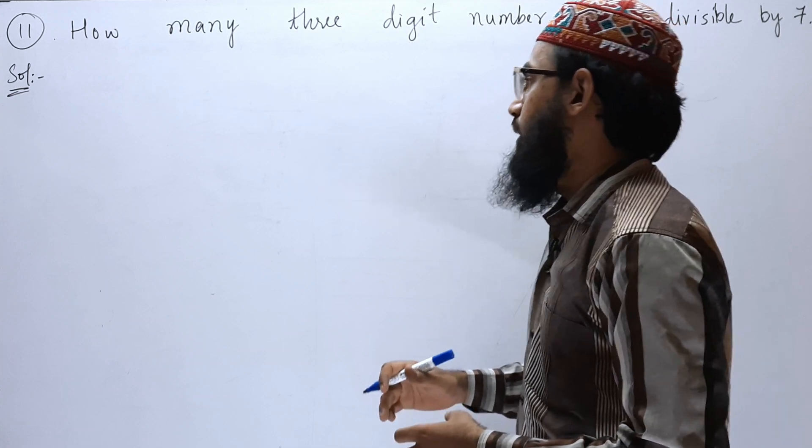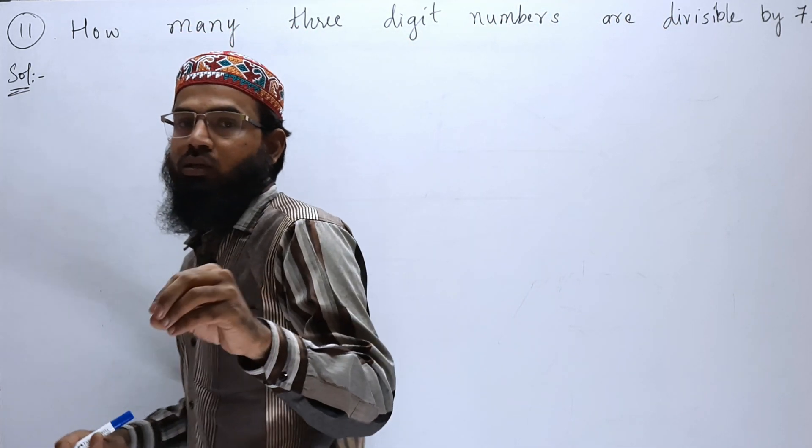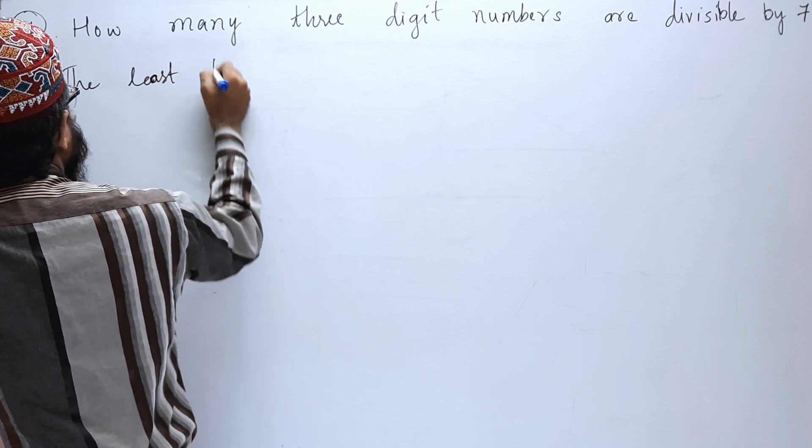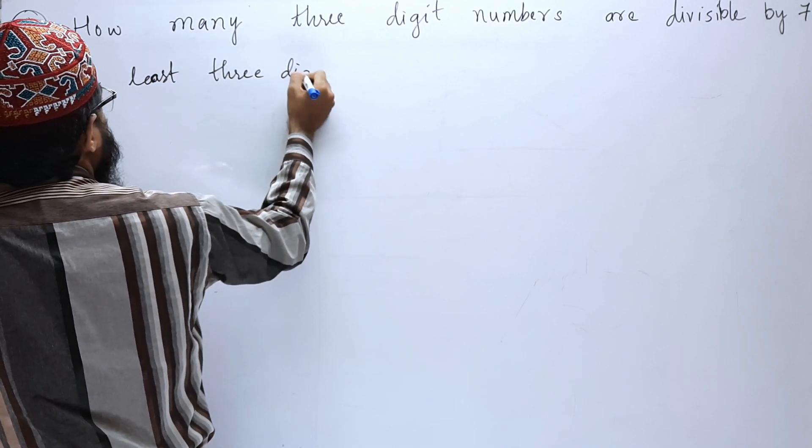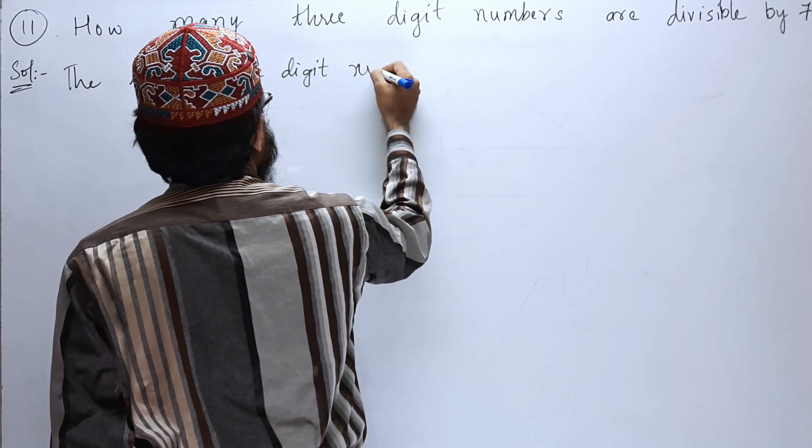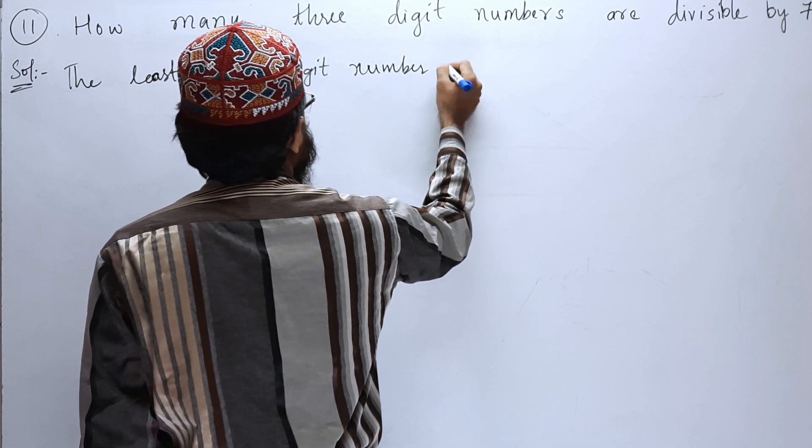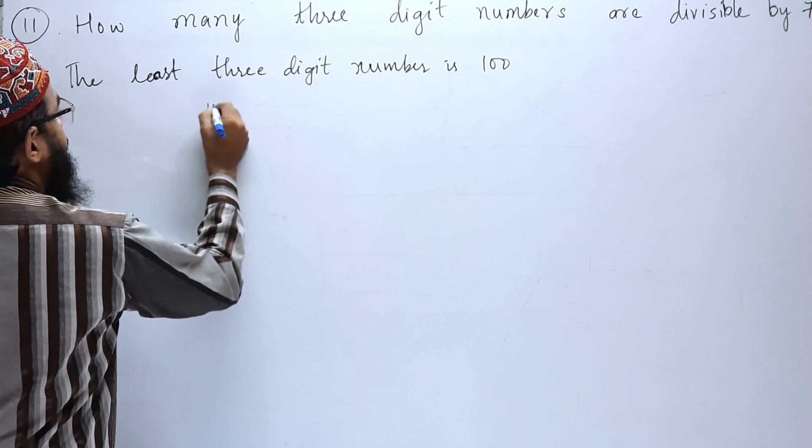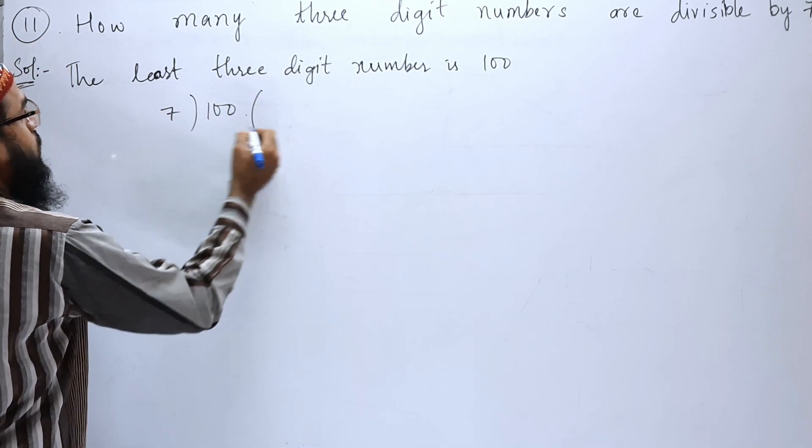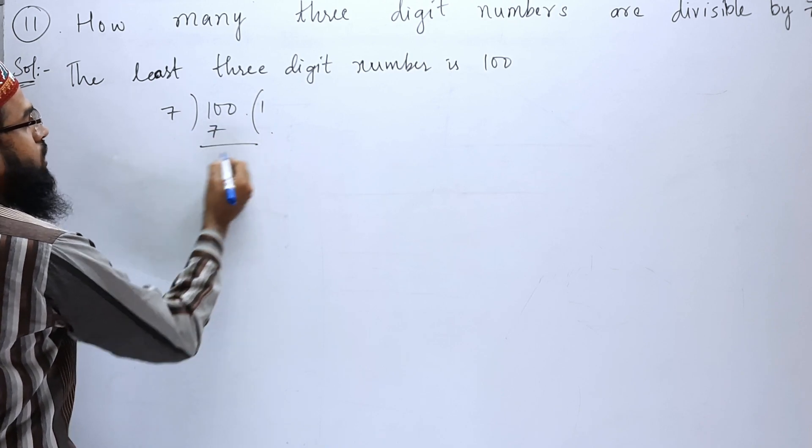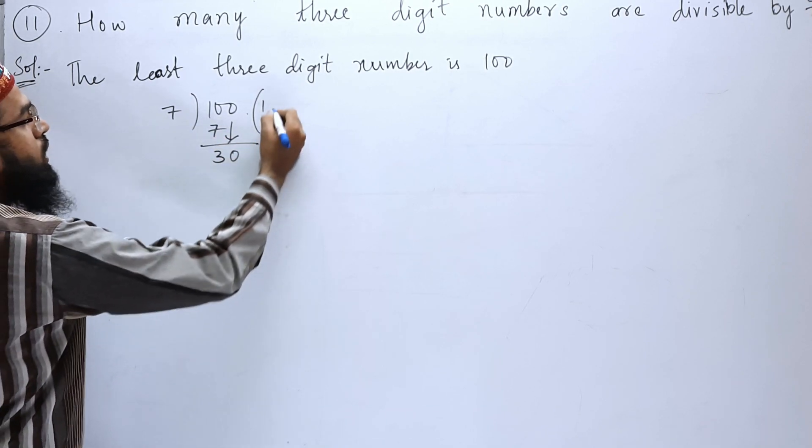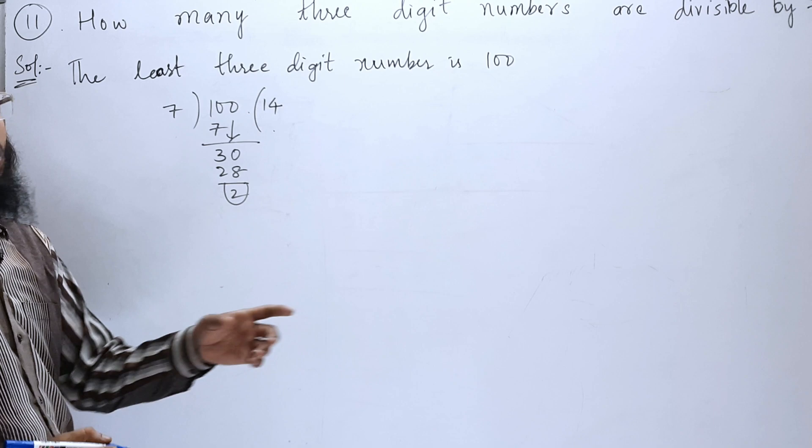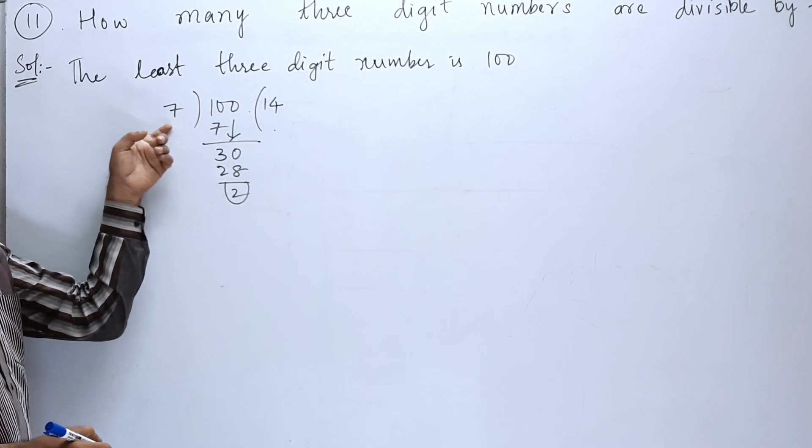So before finding that, let us write what is the least 3-digit number. The least 3-digit number is 100. So let us divide this with 7. So 100 divided by 7: 7 ones are 7, so 3 is left, 0 comes down, 7 fours are 28, 2 is left. So here we have to stop. Why? Because 2 is smaller than 7.